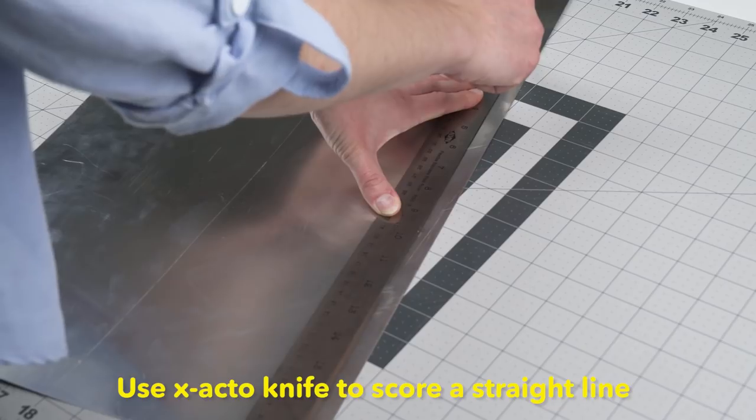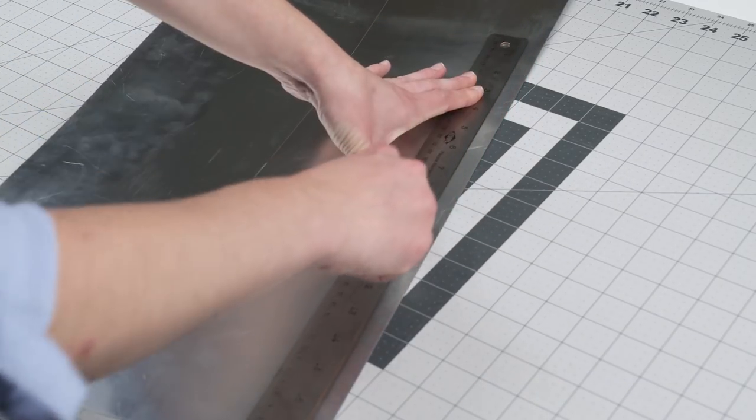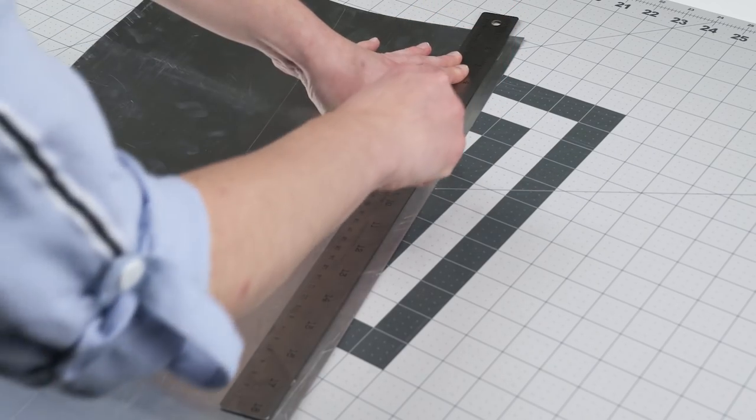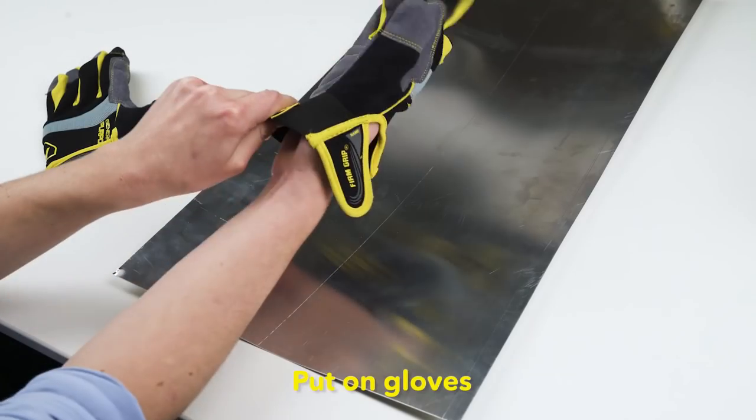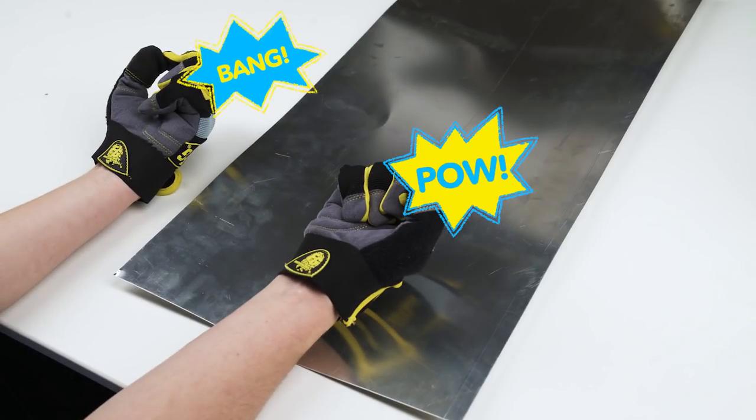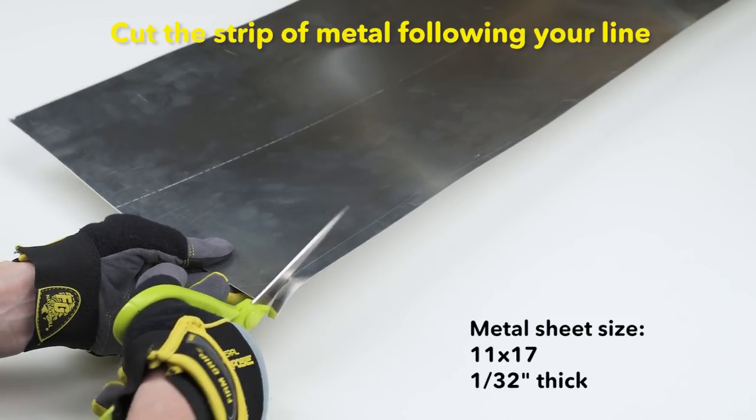Then, take your ruler and line it up with the lines you just made. Take the exacto knife and draw a straight line. Do this a couple of times so you can really see the line. Next, put on some work gloves. Safety first! Cut the line of sheet metal out with scissors.